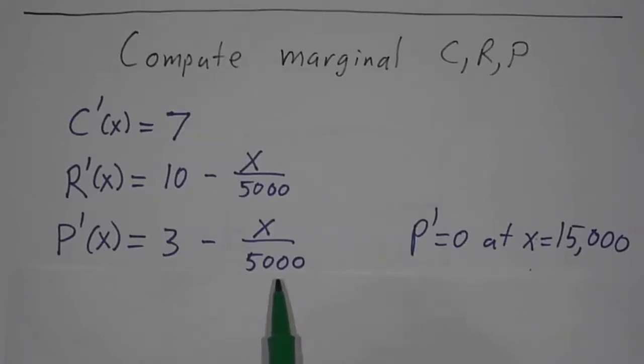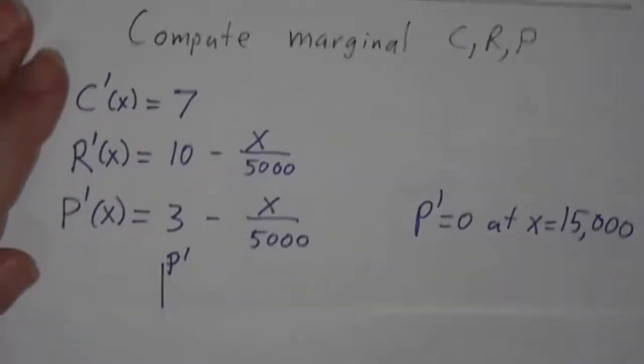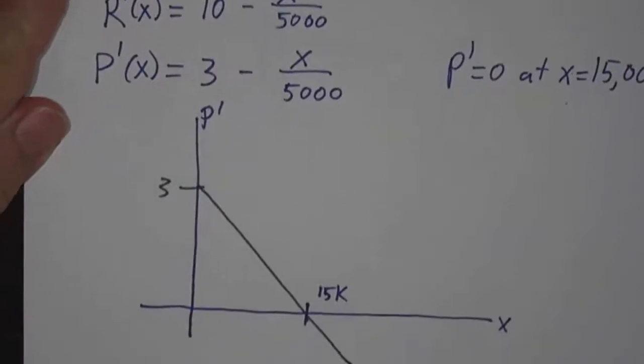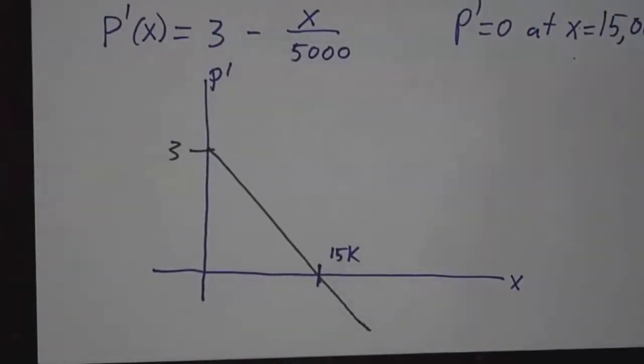And so we notice that the marginal profit is 0 when we're making 15,000 items. If we make less than 15,000 items, then the marginal profit is positive. If we make more than 15,000 items, the marginal profit is negative.